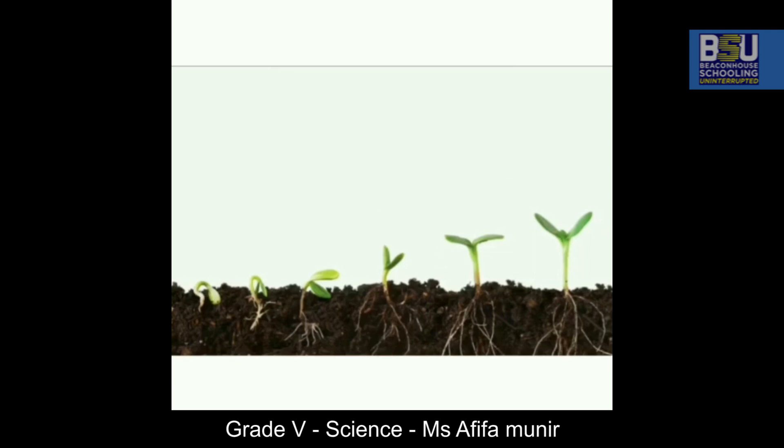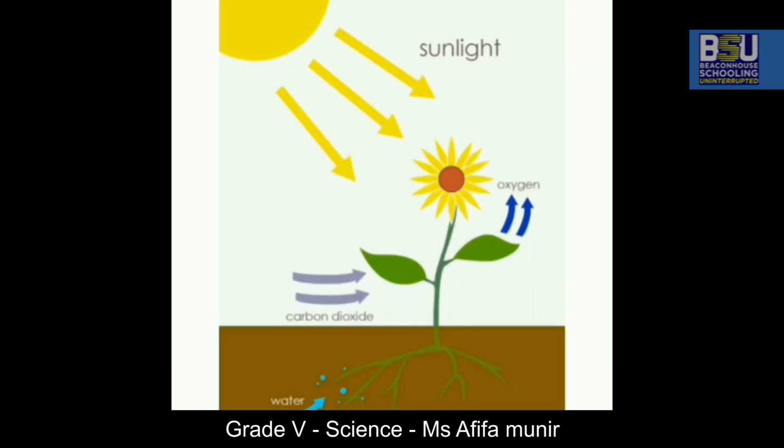The seed does not start growing everywhere — it needs special conditions. When the seed starts growing and the seedling is formed, it starts making its own food once it has leaves.